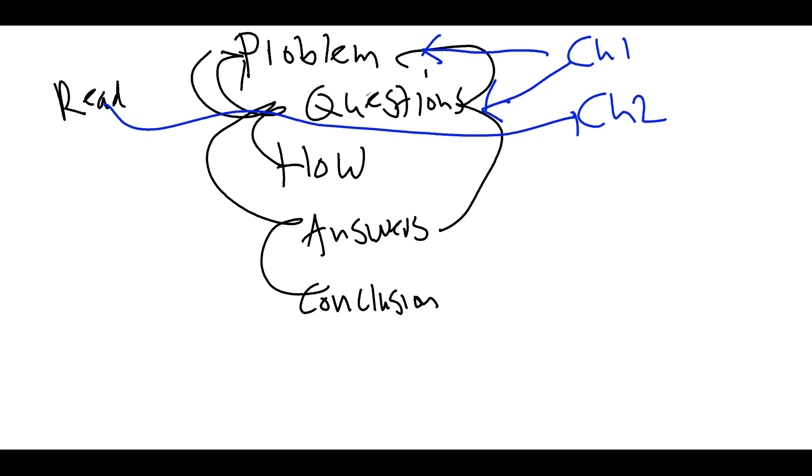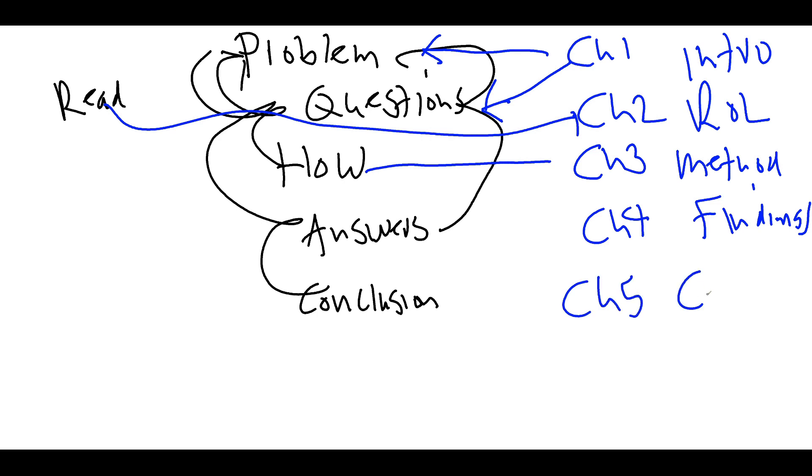And of course all the stuff that you read helps you to formulate the last chapter as well, which is your Chapter 5. Chapter 3 is connected with how you're going to answer your questions. We call this the methodology. By the way, Chapter 2 is called the review of literature, Chapter 1 is called the introduction. Chapter 4 is your findings, that's the answers to your questions.